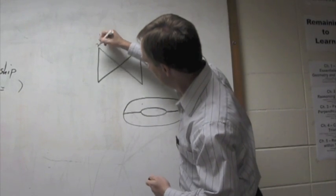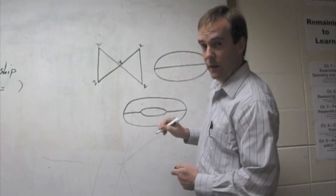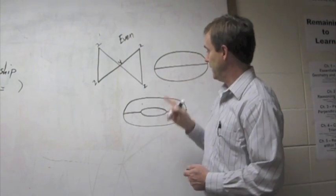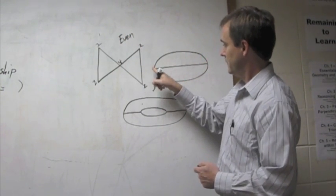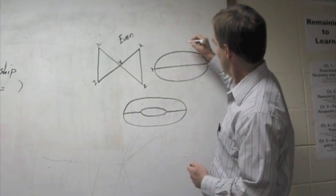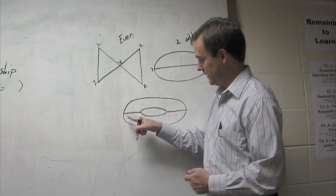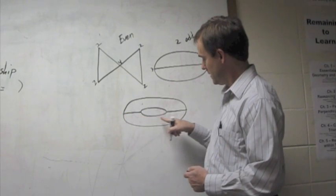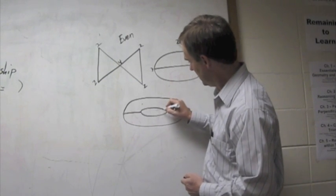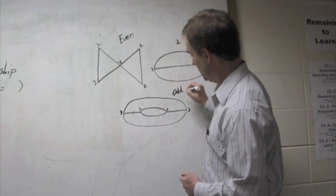This one has two, two, four, two, two — they're all even nodes. This one has three and three — two odd nodes. This one has three, three, three, and three — those are all odd nodes, more than two.